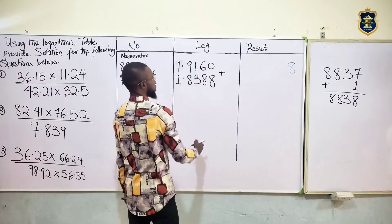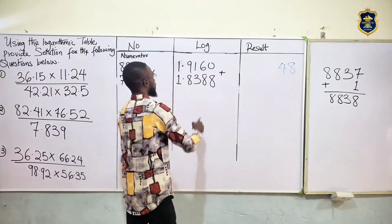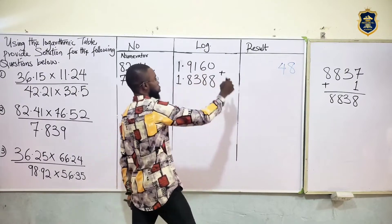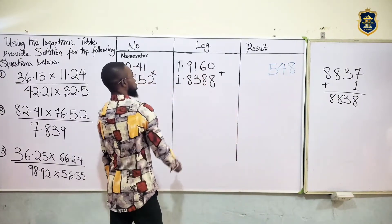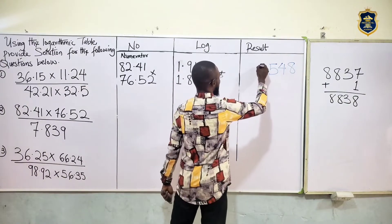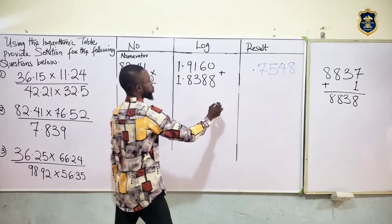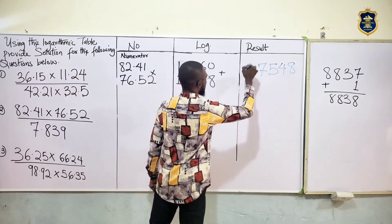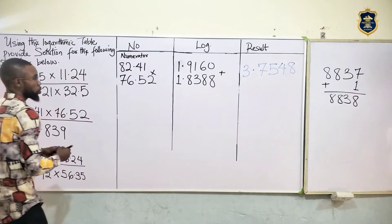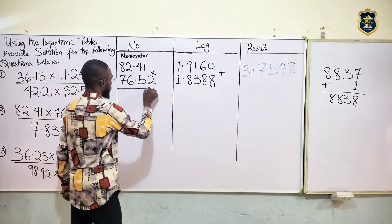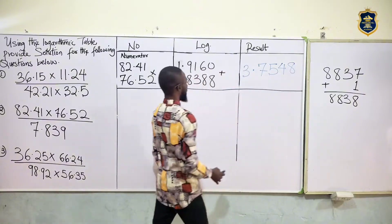So log 76.52 gives mantissa 8838. Because they are multiplying in the numerator, we add. 0 plus 8 is 8. 8 plus 6 is 14 — put 4, carry 1. 3 plus 1 plus 1 carried is 5. 9 plus 8 is 17 — put 7, carry 1. 1 plus 1 plus 1 is 3. So the numerator result is 3.7548.